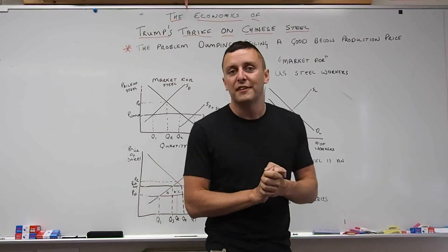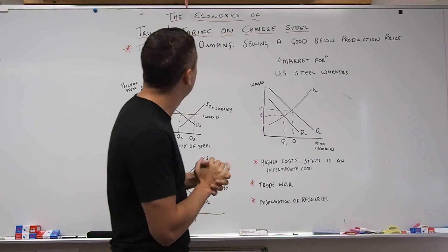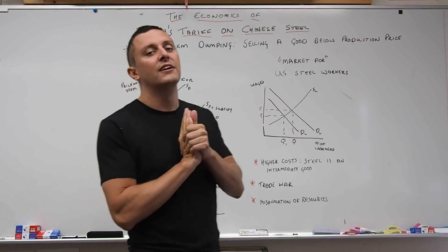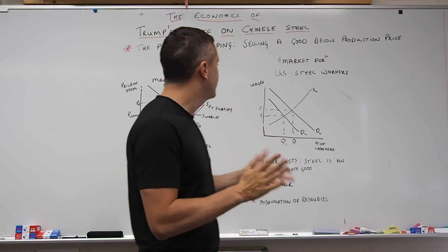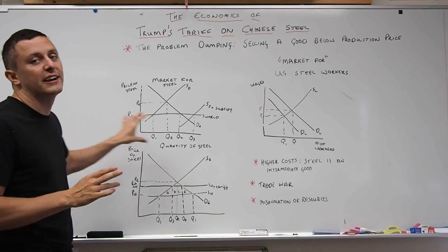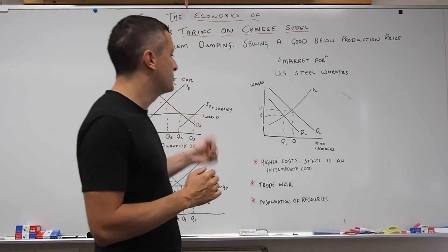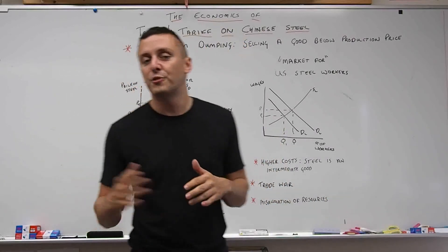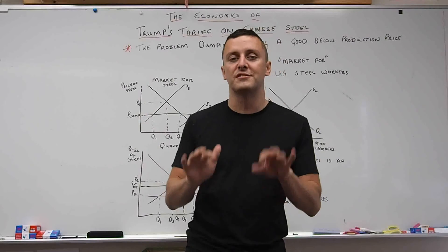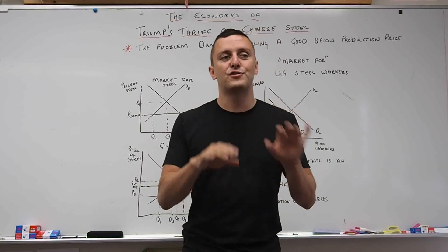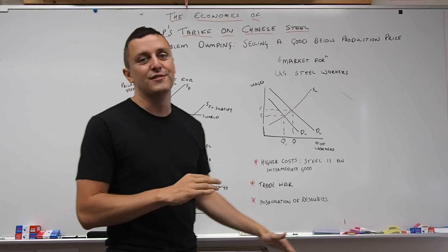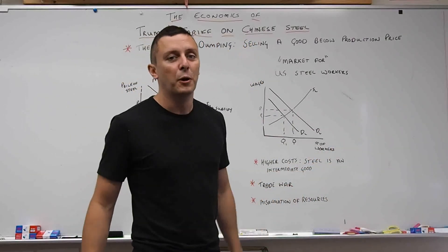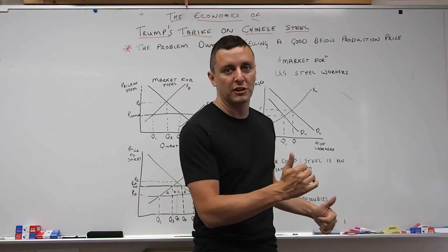So that was a quick video on Trump's tariff on Chinese steel. It's a very good topic to write your IA on because there's lots of information and lots of diagrams you can use and explain. Your 750 words should be really easy to write. If you go to Google News and type 'tariff China,' there will be hundreds of links and many newspapers covering this issue. Thanks very much — good luck with your essay.